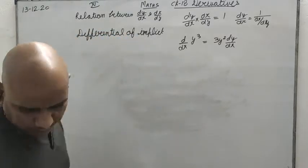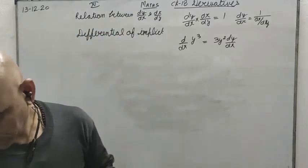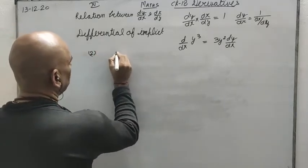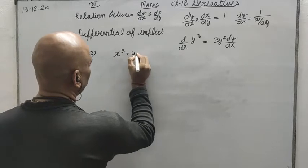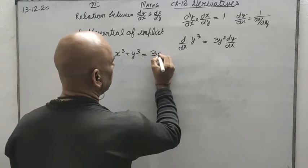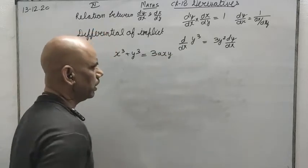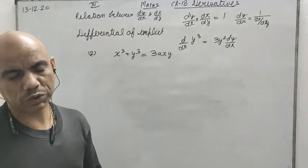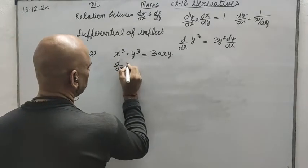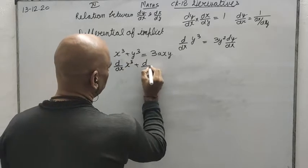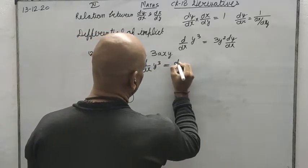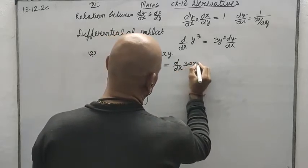Let us see a few more questions. The second example: x cubed plus y cubed equals 3axy. Once again, he is asking to find the differential with respect to x. So d over dx of x cubed plus d over dx of y cubed equals d over dx of 3axy.